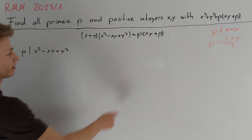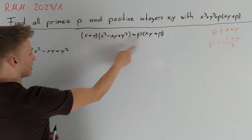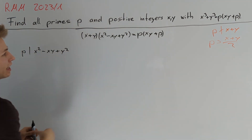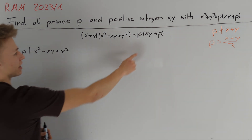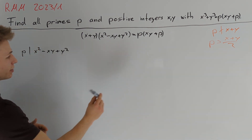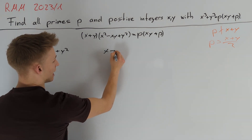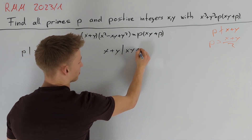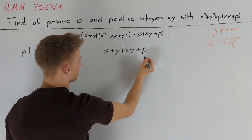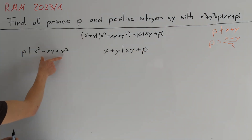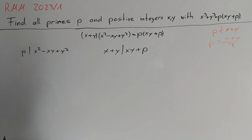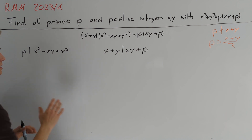Dividing the equation by p and (x + y), the left-hand side is an integer, so the right-hand side must also be an integer. We get that (x + y) divides xy + p.